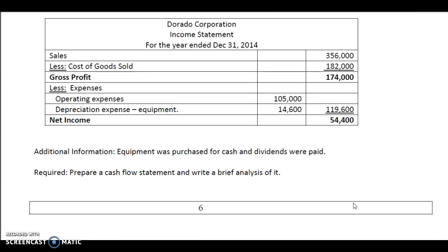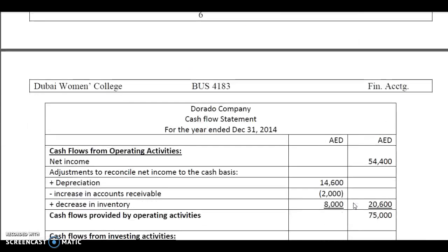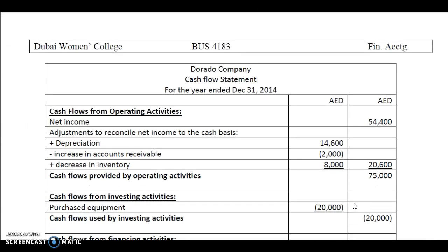In the cash flow statement, the first heading is the cash flow from operating activities. You start with the net income, which you bring forward from the income statement — which is 54,400 — and now you adjust the non-operating activities to the net income. You begin with depreciation, which you bring from the income statement. Depreciation is a non-operating expense, so we add it back to the net income to get the cash flow from operating activities.